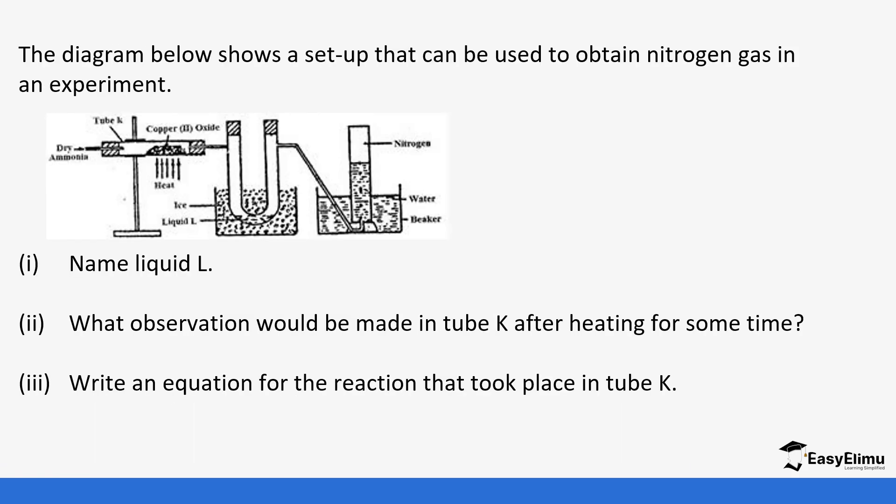Second question: the diagram below shows a setup that can be used to obtain nitrogen gas in an experiment. You can see ammonia gas is dispersed over copper 2 oxide and liquid L is produced in nitrogen. Name liquid L. We said liquid L is going to be water.